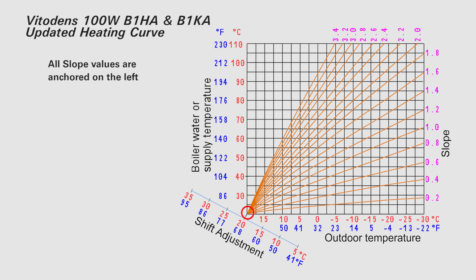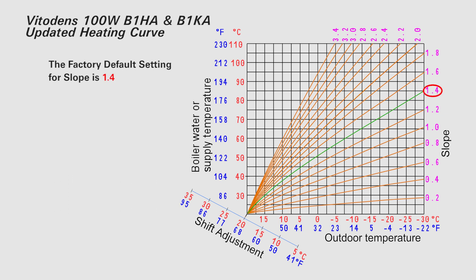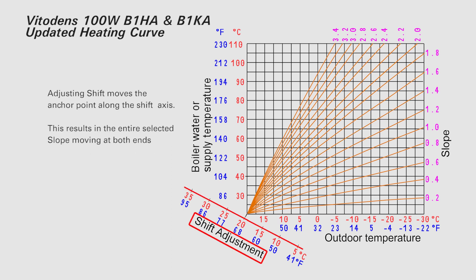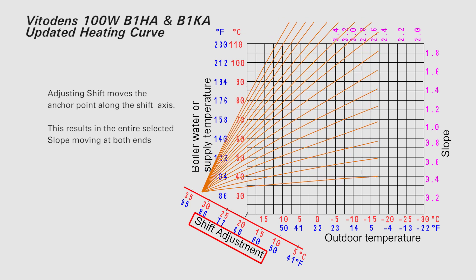All slope values are anchored on the left-hand side. Adjusting the slope settings changes the angle of the slope. A higher number means the boiler water set point will change faster with an outdoor temperature change. The factory default setting for slope is 1.4. Adjusting shift moves the slope anchor point along the shift axis, which results in the entire selected slope moving at both ends.